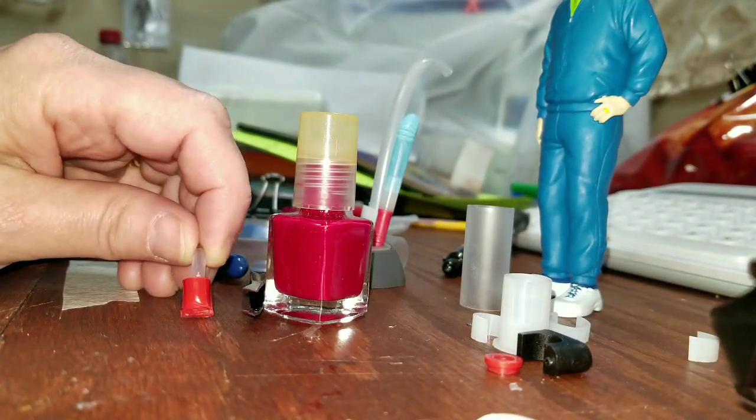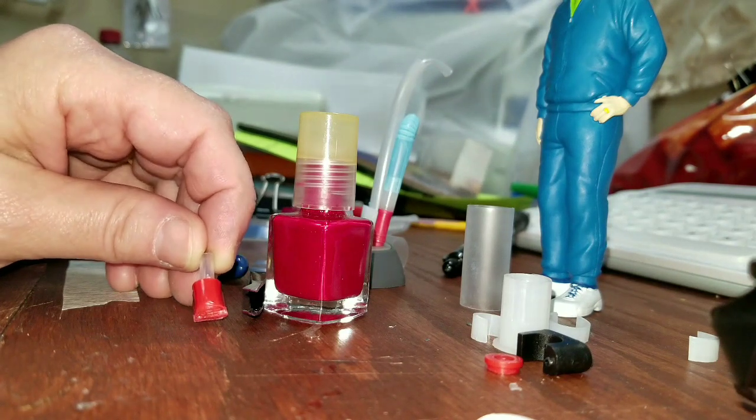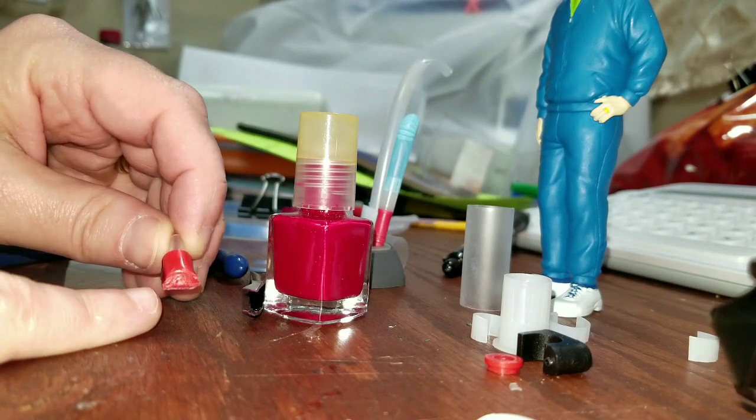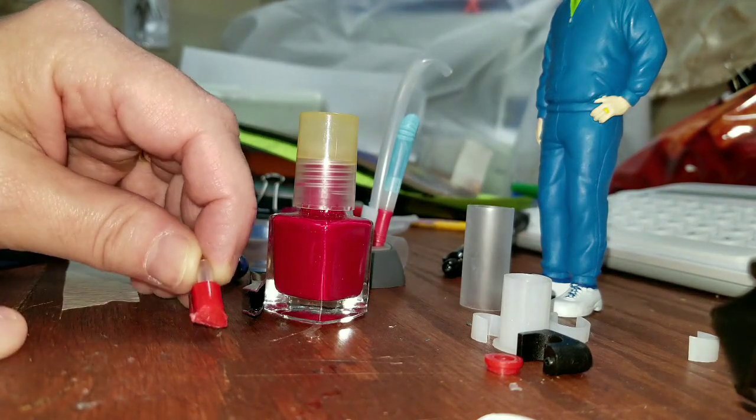So for the other attachment, take the same thing and then you melt the end and you squeeze it together with pliers. And then you can cut it off and then you'll have the attachment that goes like this.